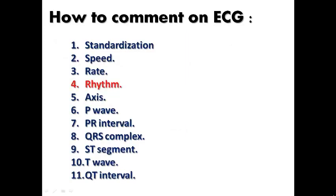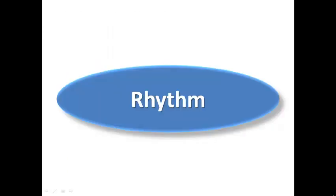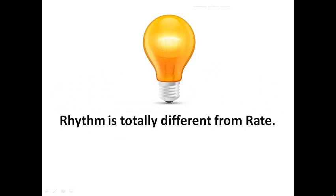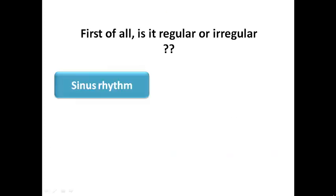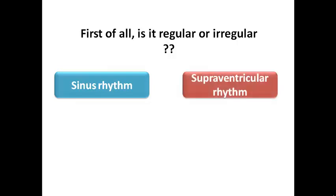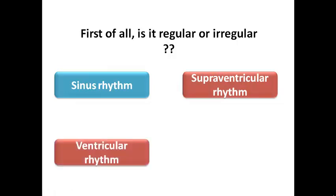Now we go to the rhythm, which will take much time in today's lecture. The rhythm is totally different from rate — rhythm is a matter of where the origin of the electrical rhythm is, whatever the rate. First, ask whether it is regular or irregular. There are three general types of rhythm: normal sinus rhythm, supraventricular rhythm, and ventricular rhythm, each with subtypes.